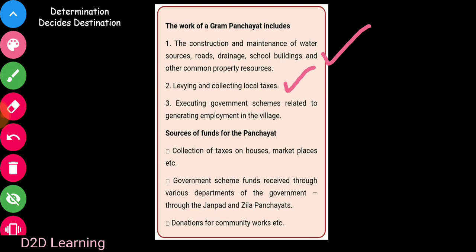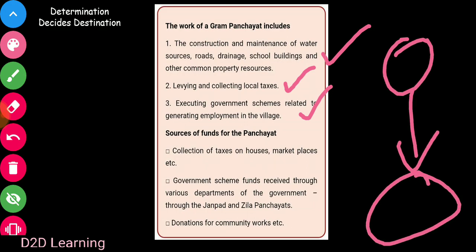Next is levying and collecting local taxes. So if you handle all the local taxes, you can collect all these. And next is executing government schemes related to generating employment in the village. So the government can run a scheme to create employment in the village. One organization for this is the Gram Panchayat system.